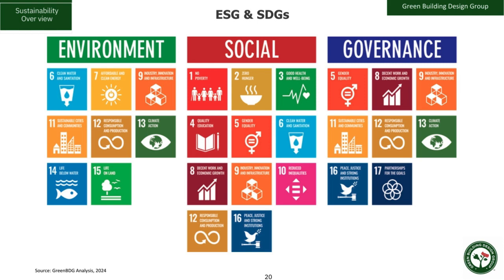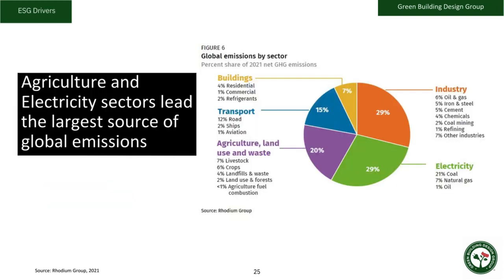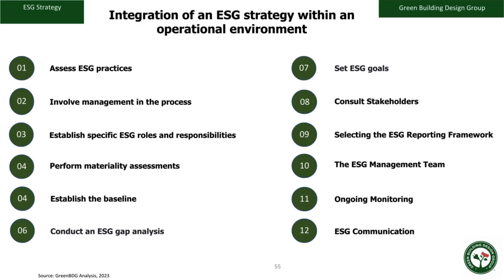An ESG strategy can be understood as a business approach that integrates environmental, social and governance factors into the company's operations, into their decision-making processes, as well as the overall strategy. Companies can adopt ESG strategies to achieve positive social impact, attract investors, comply with regulations and satisfy employees as well as their various stakeholders.